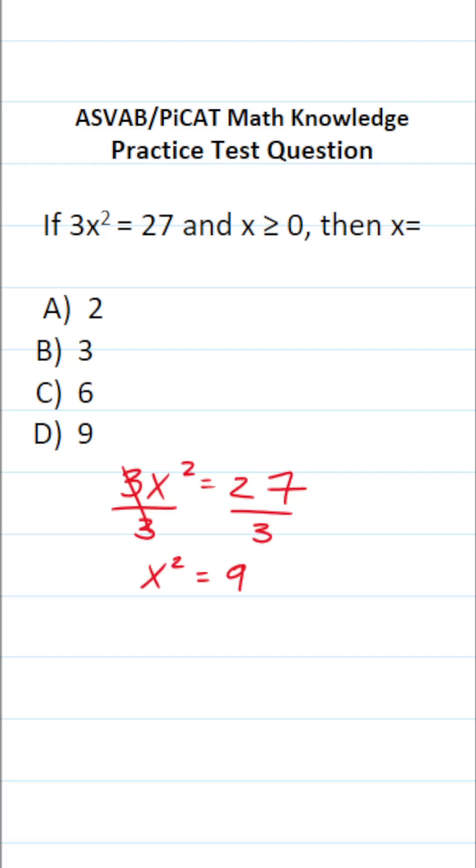Now to get x by itself, we have to get rid of this square. And to do that, we're going to perform the opposite operation. That is to say, we're going to take the square root of both sides of our equation.